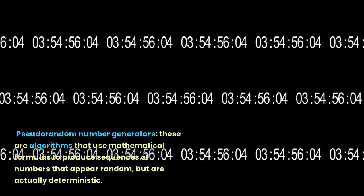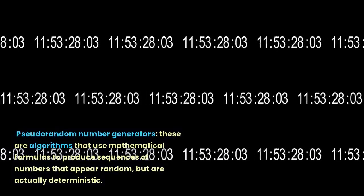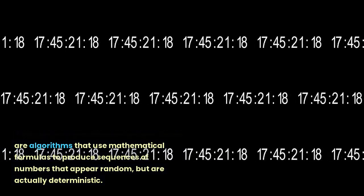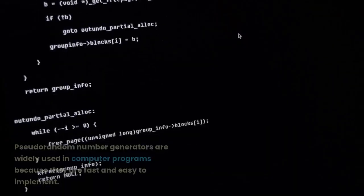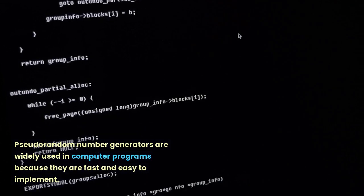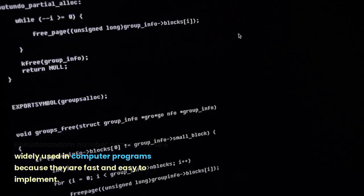Pseudo-random number generators. These are algorithms that use mathematical formulas to produce sequences of numbers that appear random, but are actually deterministic. Pseudo-random number generators are widely used in computer programs because they are fast and easy to implement.